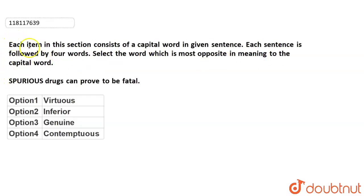Select the word which is most opposite in meaning to the capital word. Now, we have given a sentence and there is a word which is written in capitals, like spurious. And we have to find out this word's opposite meaning, which means antonym. And where do we have to do that? In the four options given.